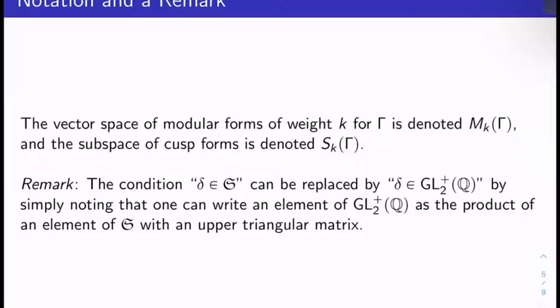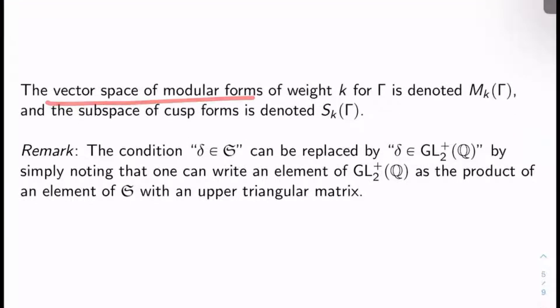Okay, some notation and a quick remark. The vector space of modular forms, the complex vector space of modular forms of weight k for Γ is denoted M_k of Γ, and the subspace of cusp forms is denoted S_k of Γ. I'd also like to make a quick remark here. The condition delta in SL_2(Z) in the definition of modular form can actually be replaced by delta in GL_2^+ of Q by simply noting that you can take any matrix in GL_2^+ of Q and write it as the product of an element in SL_2(Z) with an upper triangular matrix, and so then all the above theory goes through with this generalization here.